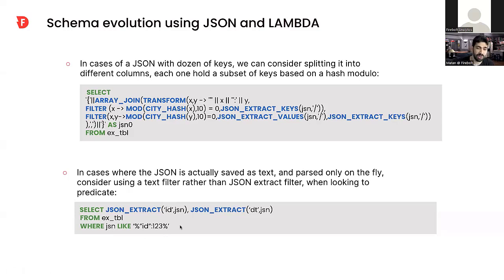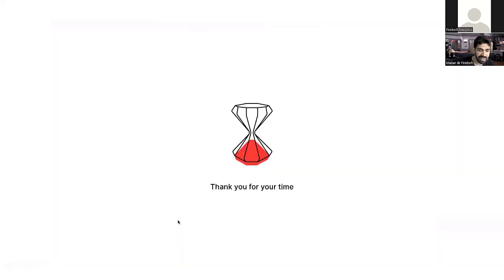In the SELECT statement itself, we could still run a JSON extract to get specific fields — this text-filtering optimization is only for the WHERE clause filtering. That's all I had today. I hope the techniques were down-to-earth enough and useful for you. Let me know in the comments if you have any questions or anything you'd like me to elaborate on. Thank you again for joining this live stream, and I'll see you in the next one.